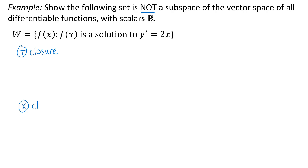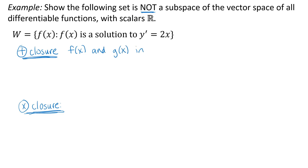I'm using the symbols we talked about in your notes, but you can just write ordinary plus and multiplication if you want. For additive closure, I want to start with two functions, f(x) and g(x), that are in the set W. That would mean they are solutions to that differential equation. The question is: is their sum also in the set W? If yes, we have additive closure; if no, we do not.